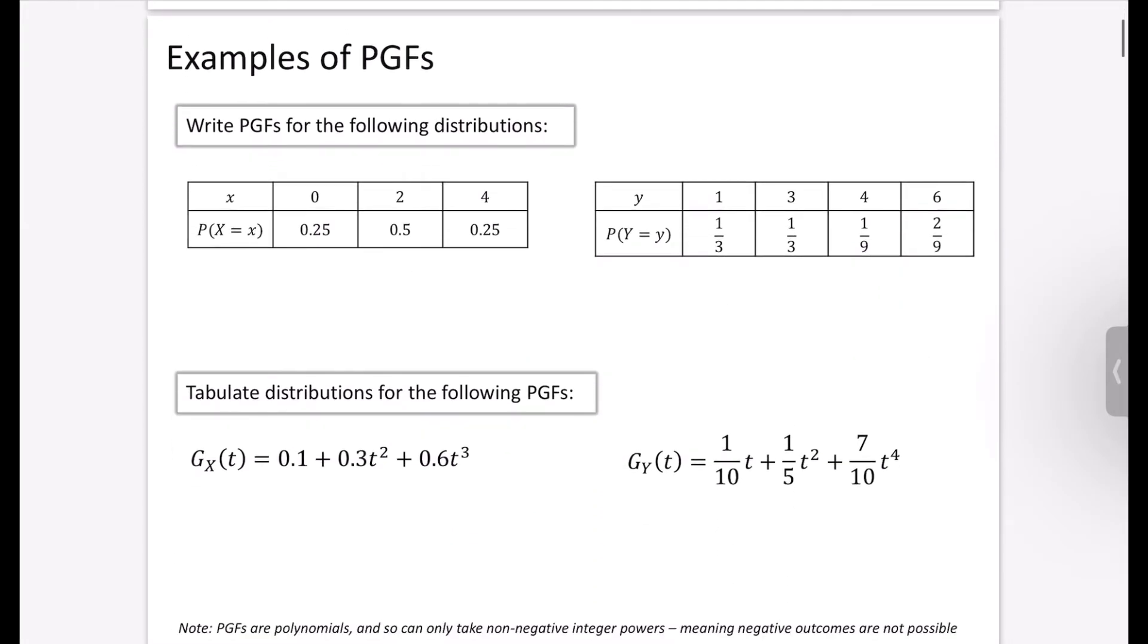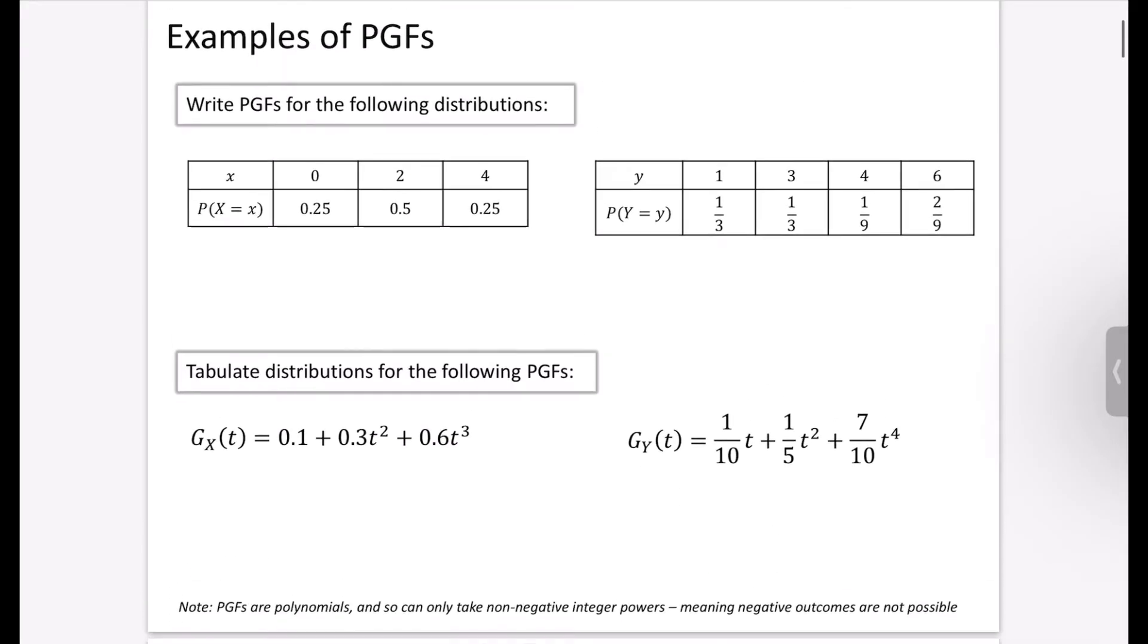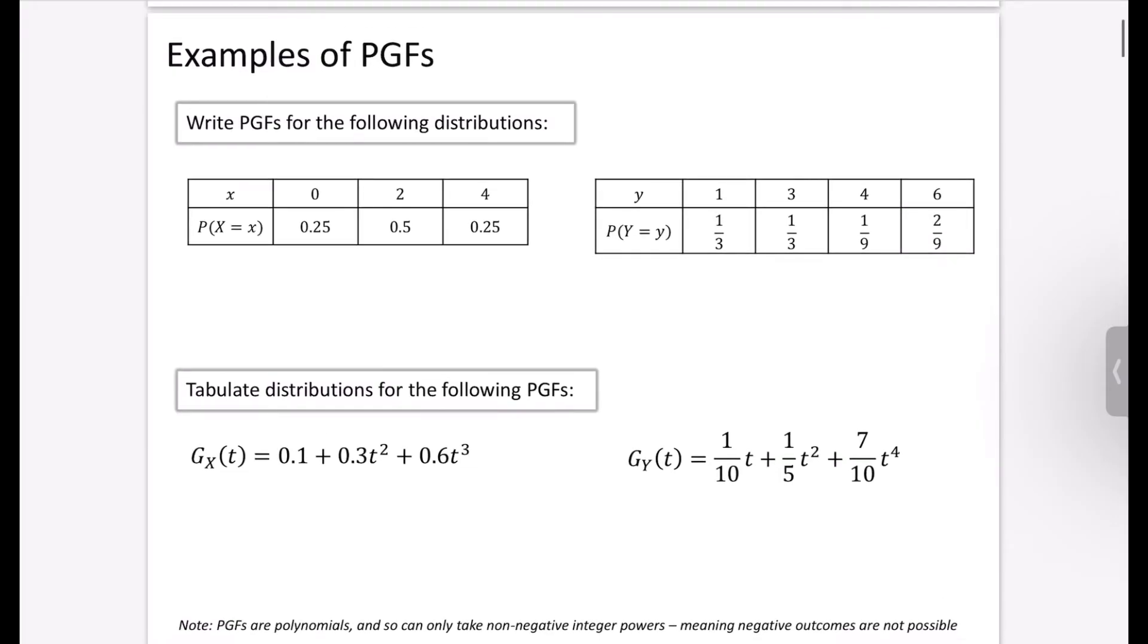So we've got some examples of some probability generating functions here. I'm going to probably have a go at just doing one, and then you can try the other one, and then I'll do one, and then you can try the other one. So this first one, it just wants us to write the probability generating functions for the following distributions. So I'm going to start off by saying that it is a function generating the discrete random variable x, and it's always going to be in terms of t, that dummy variable. Now it's going to be 0.25 times t to the power of 0, which I can just leave. The next probability is 0.5, and that's going to be t squared, because the outcome is 2. And then our last one is going to be 0.25t to the power of 4, because the outcome is 4. So why don't you have a quick go at writing down this next one?